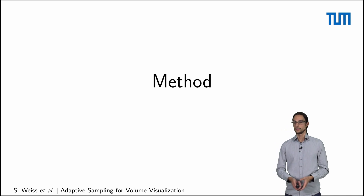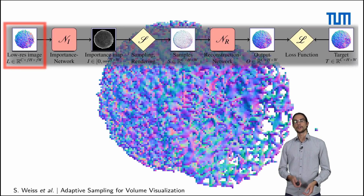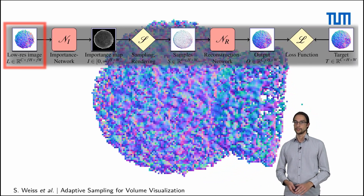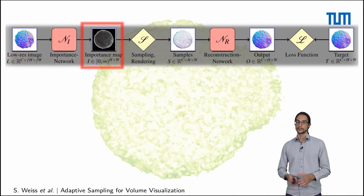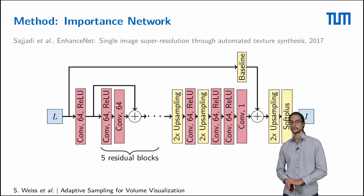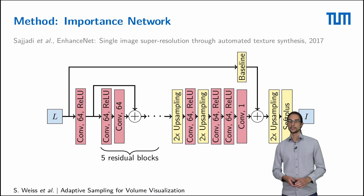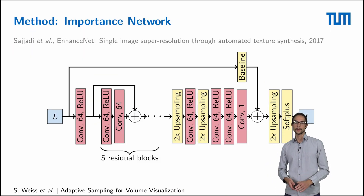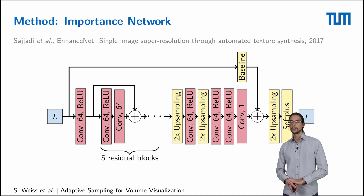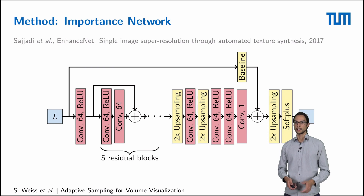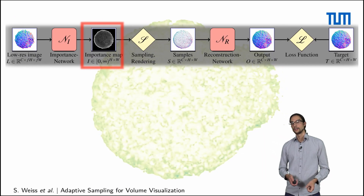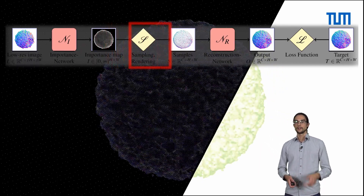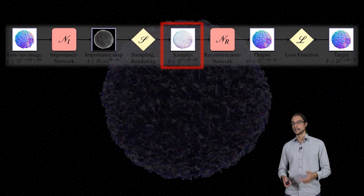This is achieved in the following way. First, a low resolution image is rendered, and then the first importance network estimates the importance map. For this network, we use a variation of the Enhanced Net by Sachdi et al. from 2017, a small residual neural network that performs an upscaling of eight times in total. From this importance map, we render the sparse samples.